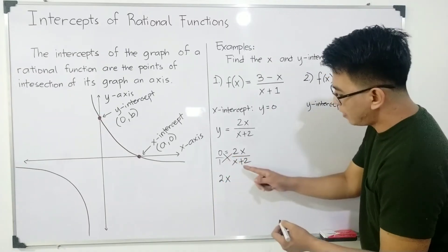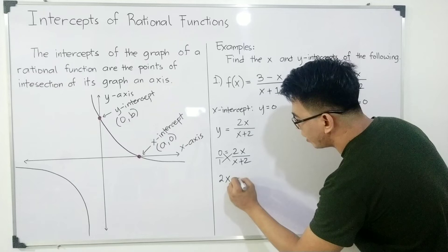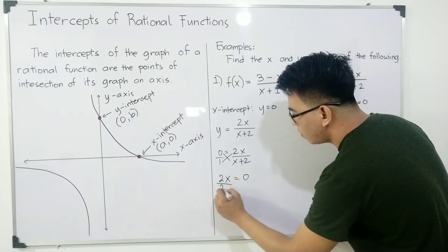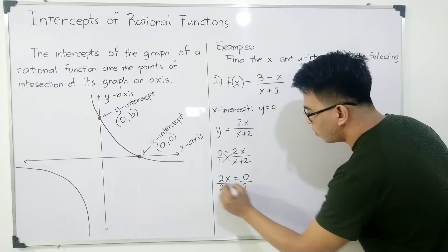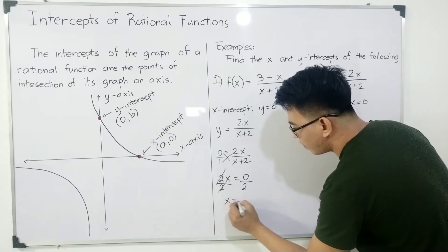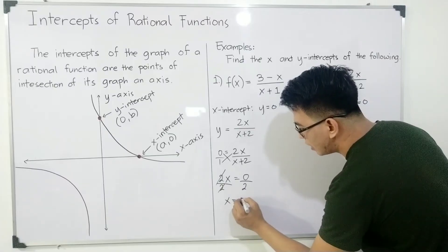Now, as for 0 times (x+2), it will become equal to 0. And then solve for x, simply divide it by 2 and then divide it by 2. Cancel, cancel. Your x is equal to 0.